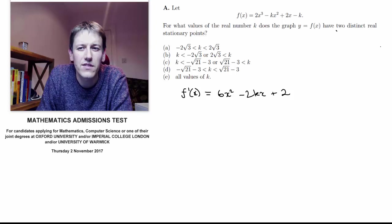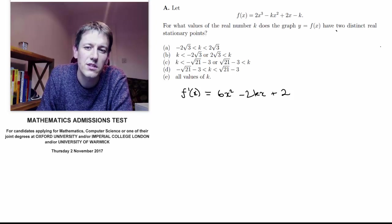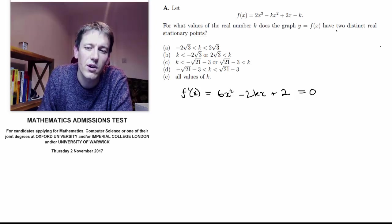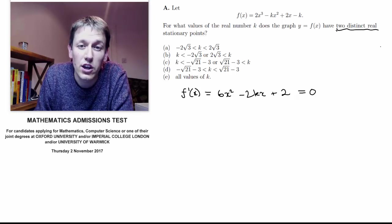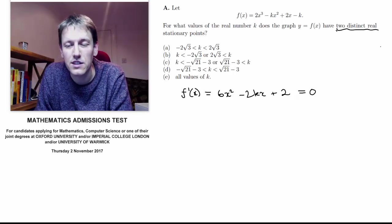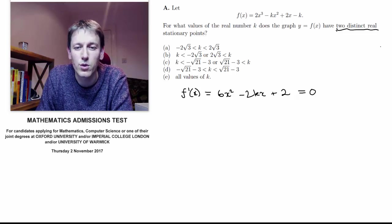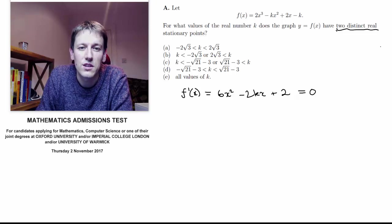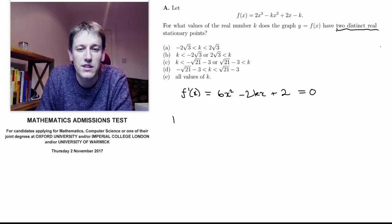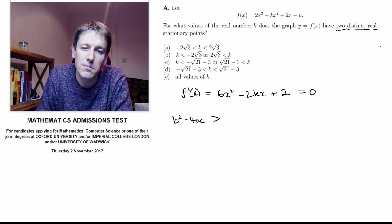And for this to have two distinct real stationary points, we want to make it zero. This phrase, two distinct real, usually goes with roots when you're solving quadratics, and of course really we are solving a quadratic here. So you should know that you get two distinct real roots of a quadratic when the discriminant, b squared minus 4ac, is bigger than zero.